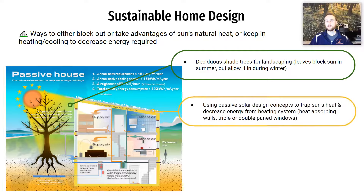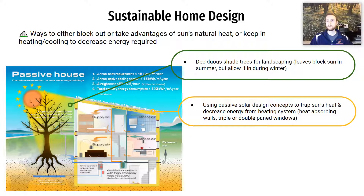Another strategy is passive solar design, which includes the deciduous shade tree but also other elements like materials that absorb the sun's natural heat — such as brickwork or dark-colored flooring — and double or triple paned windows that trap that heat almost like a greenhouse effect to heat your home in cooler winter months.